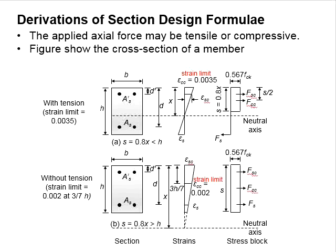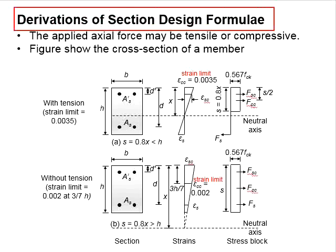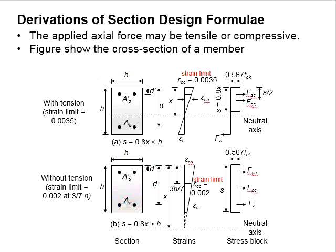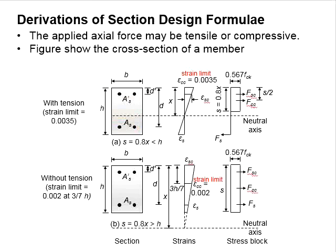This video presents the derivation of the single design formula based on first principles. This represents the cross-section of a column. The dimensions of the column are given here, and there are steel bars in the column. Assuming the area of the steel bar here is S'.